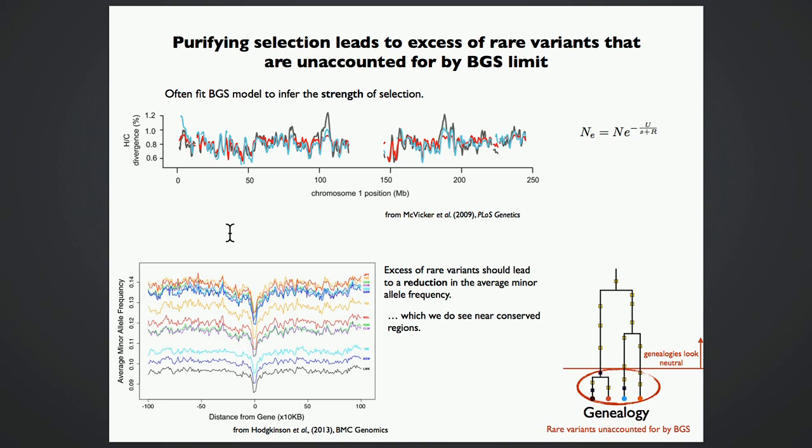So what we can do is we can look at the minor allele frequency, which should be reduced if we have an excess of rare alleles. And in fact, we do see that. So for example, this is data from the Thousand Genomes Project, which shows that basically in all populations from the Thousand Genomes Project, you see a dip in minor allele frequency exactly near those regions where we would like to apply the background selection model.